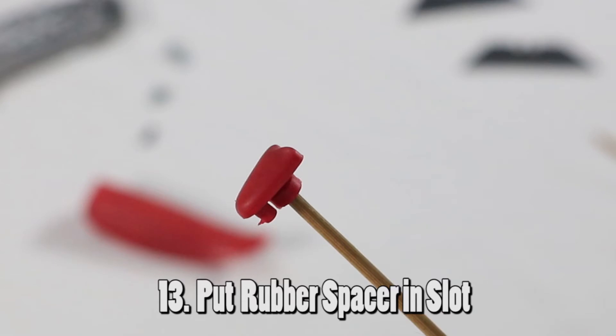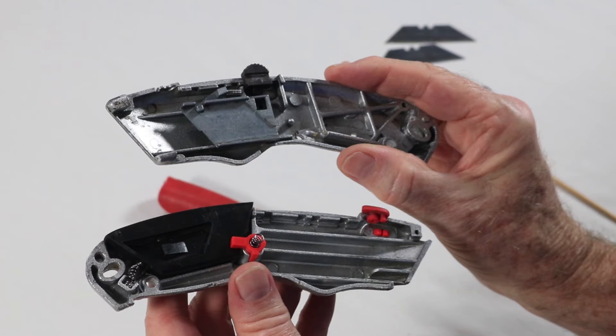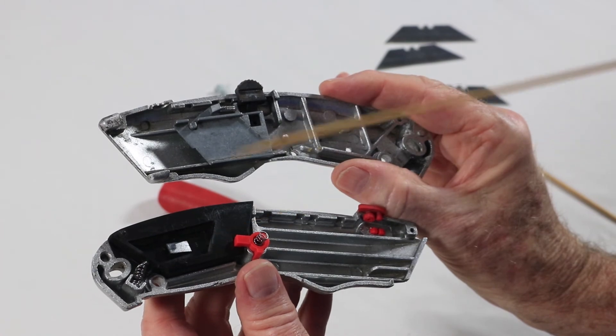Put the rubber spacer in its slot at the tip of the handle. Almost home free. We now carefully join the two sides of the knife handle. A series of pins and molded shapes align precisely to secure the blade assembly, blade release, and blade storage mechanisms.